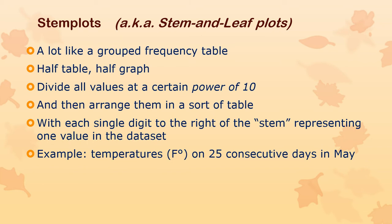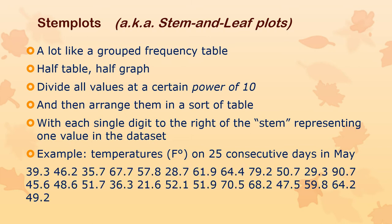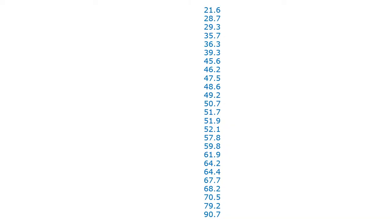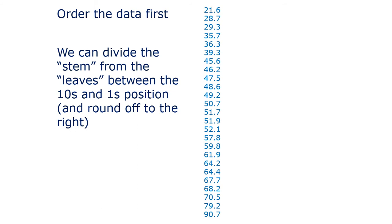Here's an example using Fahrenheit temperatures that I made up — fake data that might have been recorded on 25 consecutive days in the month of May. So you've got 39.3 degrees, 61 degrees, 61.9, 70.5, etc. Let's make a stem plot out of those. First we put them in order, as with many other visualizations. Then we have to decide how to split the stem from the leaves. In this case, it makes sense to divide between the tens and ones position. One of the observations is 21.6 — that's the very first one.